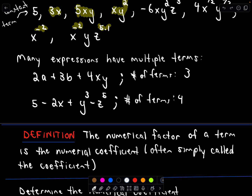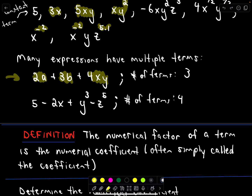Many expressions will have multiple terms. For example, I've got the terms 2a, 3b, and 4xy all added together — that's three terms, and this is known as a trinomial. In my next example, I've got the term 5, minus 2x, plus y cubed, minus z to the fifth. So in that case I've got four terms.